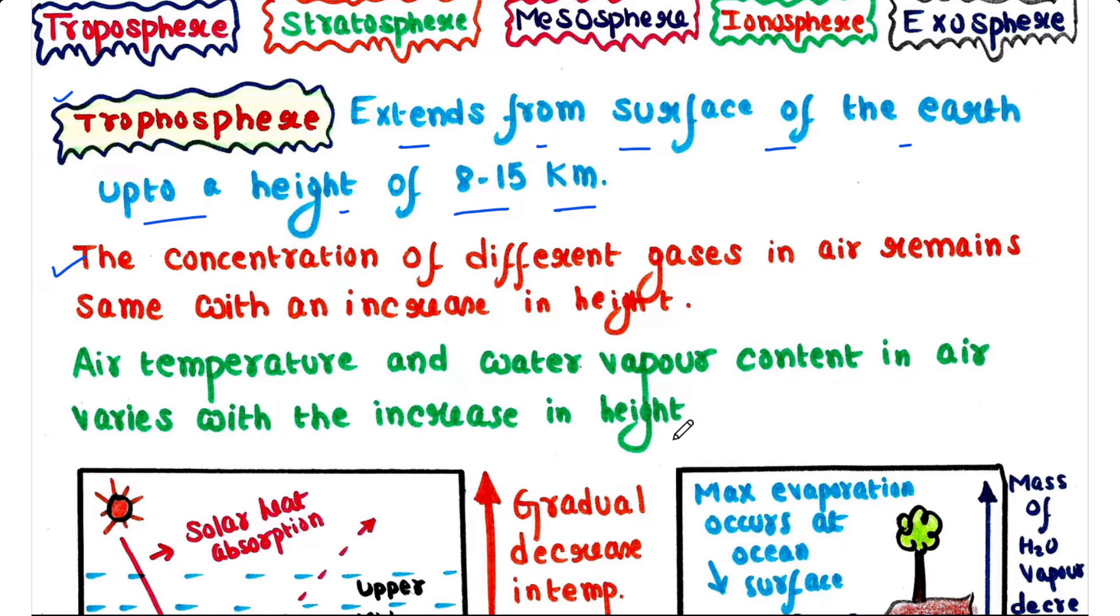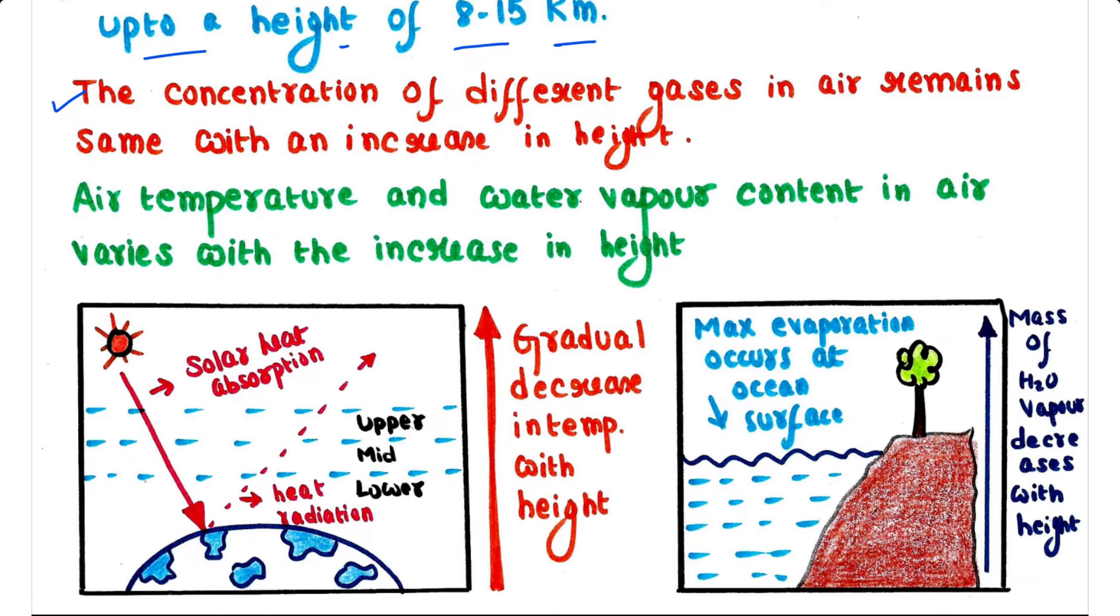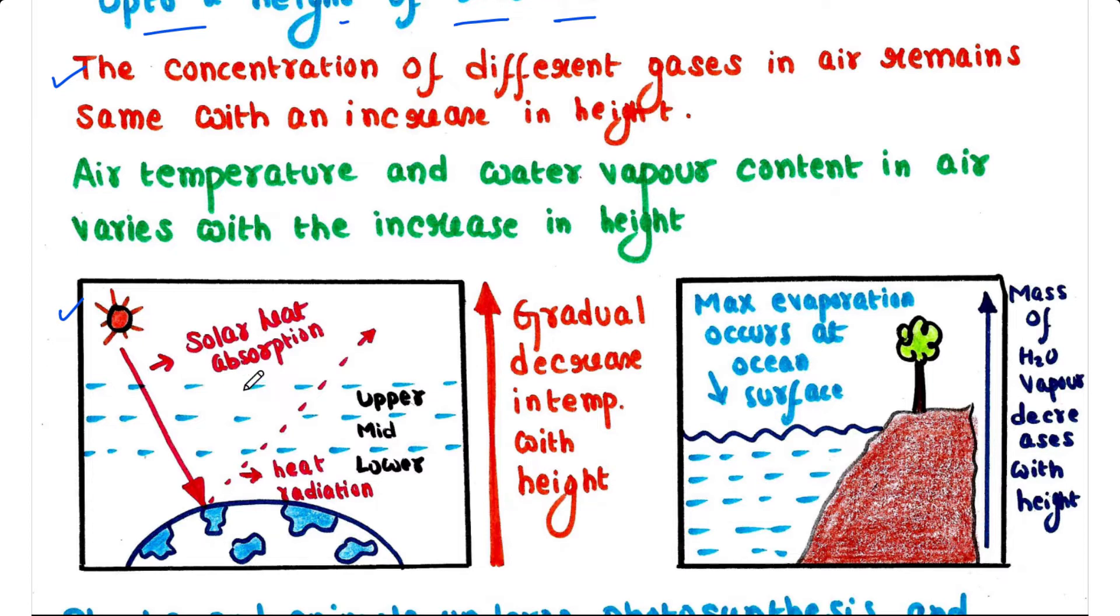So actually what happens, see this picture. Most of the solar heat is absorbed by the earth surface, and the heat then radiates from the lower to middle and then to the upper atmosphere. Hence there is a gradual decrease in temperature with height.